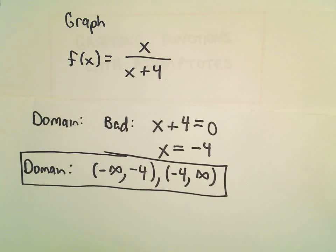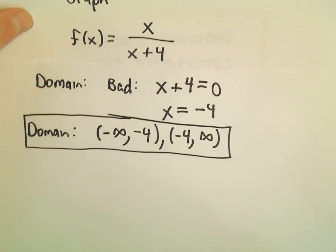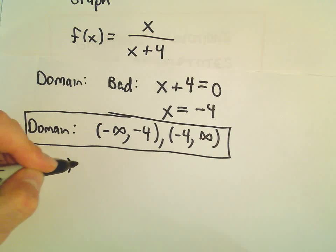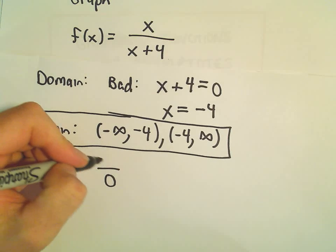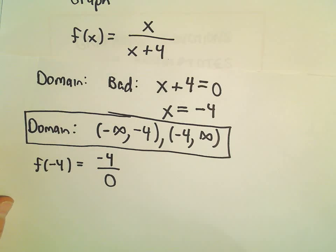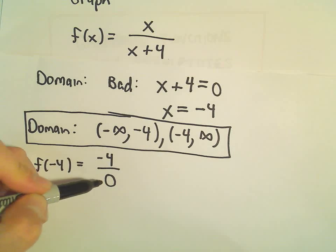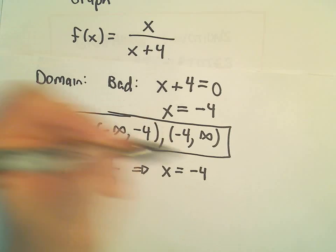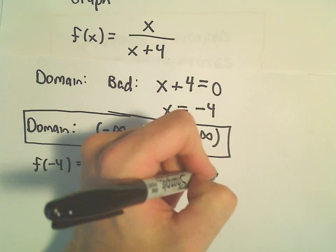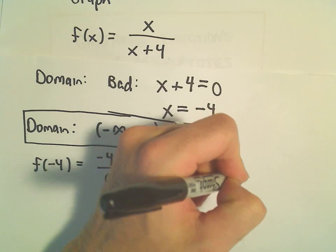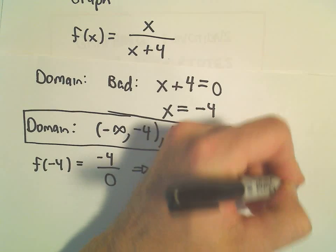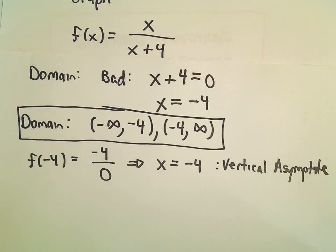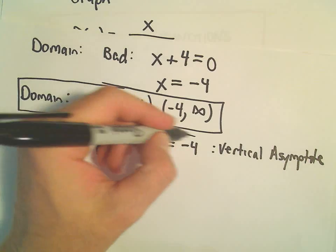Notice that x equals negative 4 — if you plug in negative 4, you get 0 in the denominator, but just negative 4 in the numerator. Recall that if you get something non-zero over zero, that tells us that value — in this case x equals negative 4 — is going to be a vertical asymptote. So not only does it make the function undefined, but something more special is going on there.